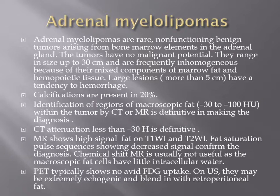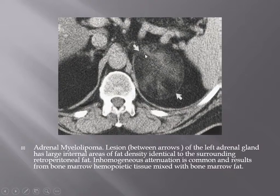Adrenal myelolipoma is a rare non-functioning benign tumor arising from bone marrow elements in the adrenal gland, and may reach up to 30 cm. Calcification is seen in 20% of cases. Identification of macroscopic fat (minus 30 to minus 100 Hounsfield units) within the tumor on CT and MRI is definitive for diagnosis. MRI shows high signal fat on T1 and T2, and fat saturation pulse sequences show decreased signal confirming the diagnosis. Chemical shift artifact is usually not useful as macroscopic fat has little intracellular water. PET-CT typically shows no FDG uptake. This is an adrenal myelolipoma with large internal fat density similar to retroperitoneal fat.